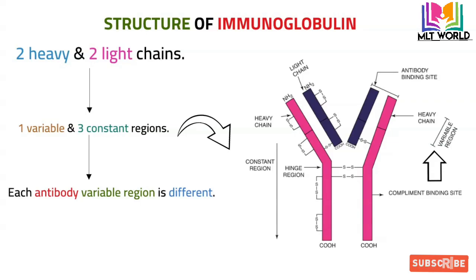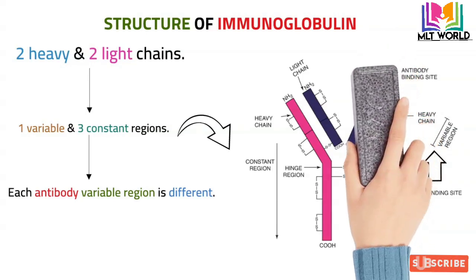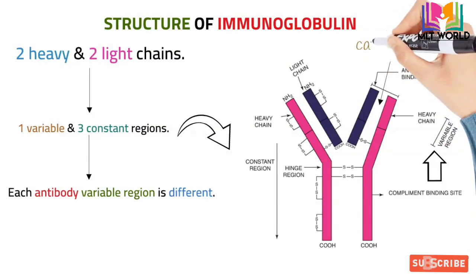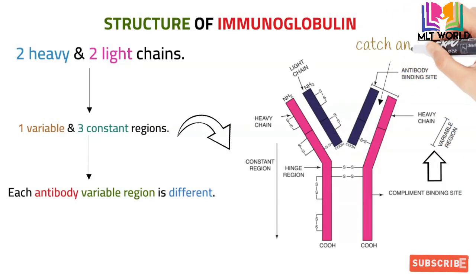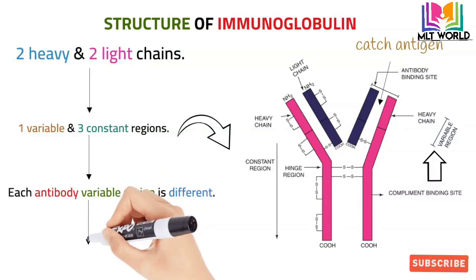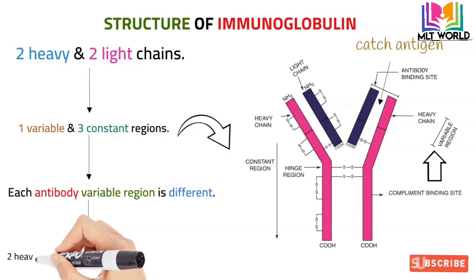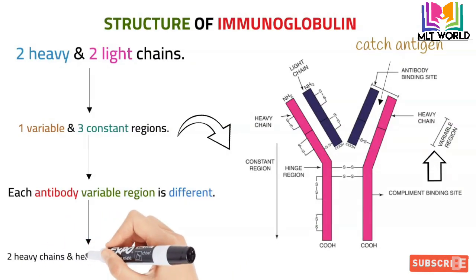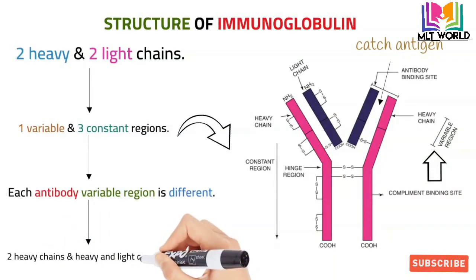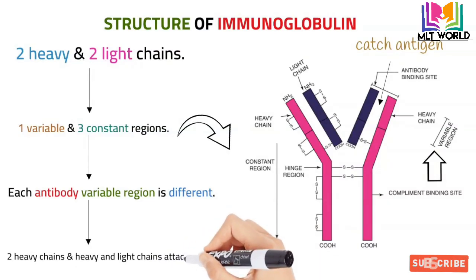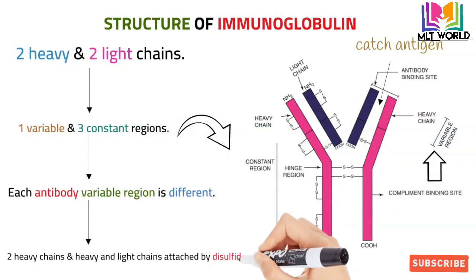Antibodies are named based on their variable region. The variable region is the point where antibodies catch the antigens — we can say it is where they trap the antigen. So the variable region is involved in catching the antigen. The heavy chain and light chain are attached by disulfide bonds.